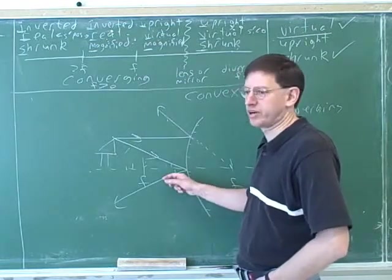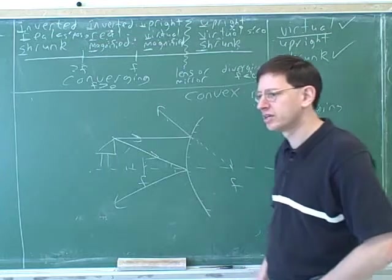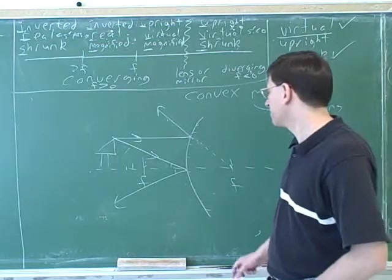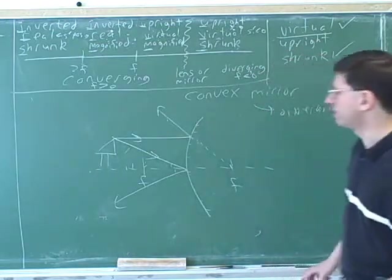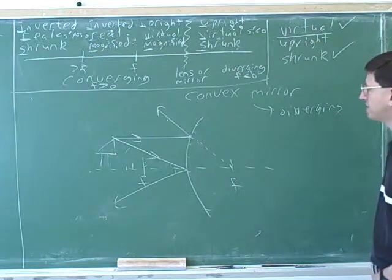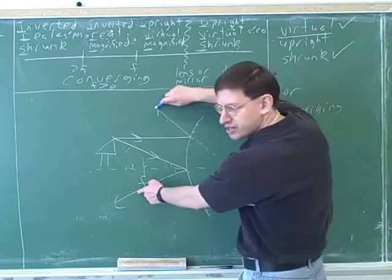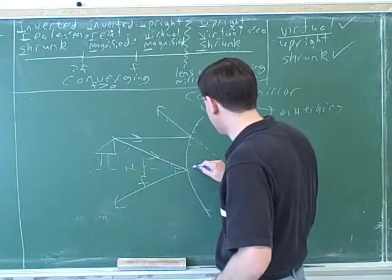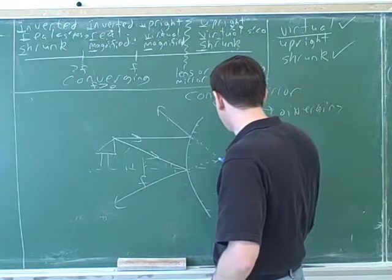So what do you need a traceback for here? Why bother tracing this back at all? So you can get the image. Yeah, because otherwise there would be no image. The image is where the outgoing light rays or their tracebacks converge. But because this is a diverging device, the outgoing light rays are never going to converge. So we need to draw the traceback to find that image.